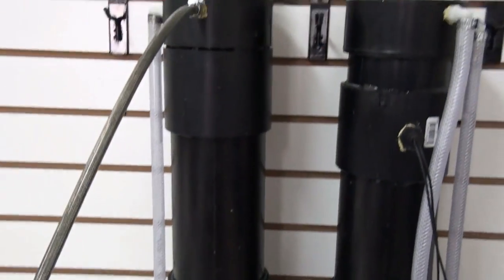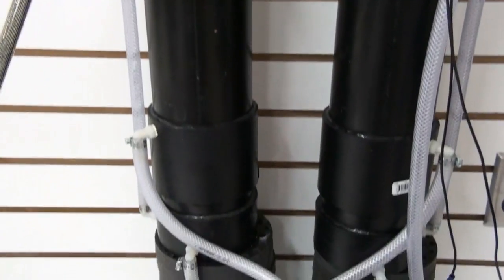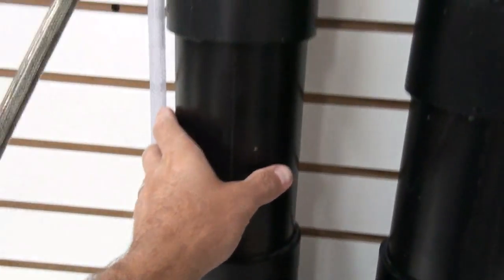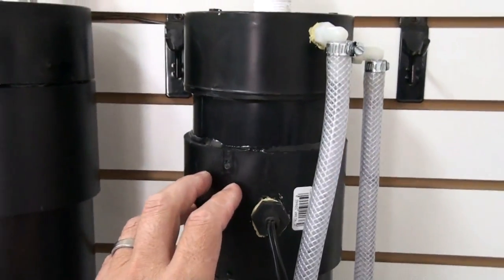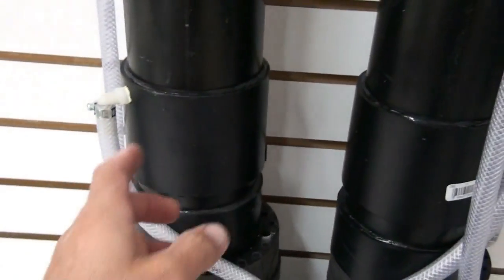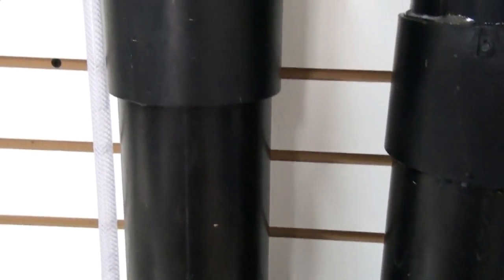Right here we've got our tanks. These tanks are made out of ABS. This is the hydrogen tank, this is the oxygen tank. The reason I used this kind of tank is so that it will hold some pressure. Now this hydro tube here will go up to about between 25 and 30 psi.